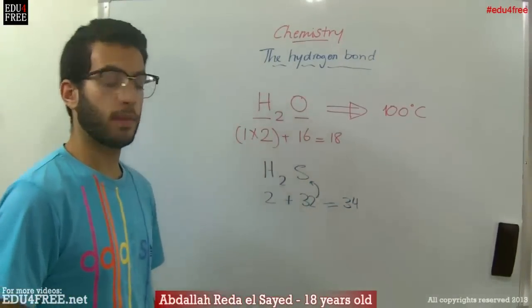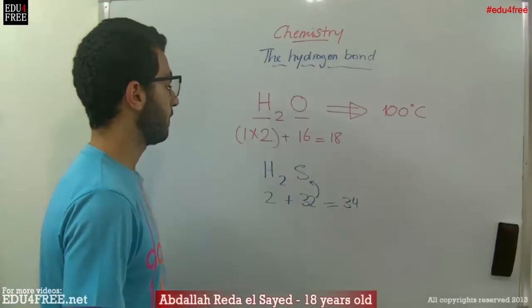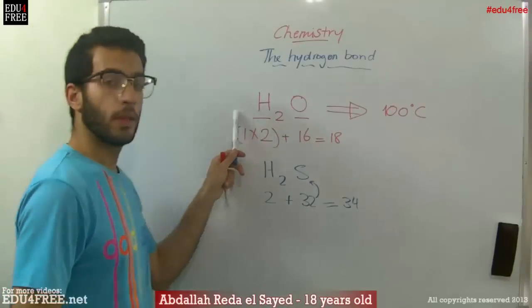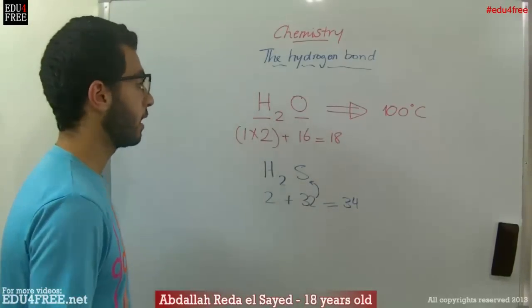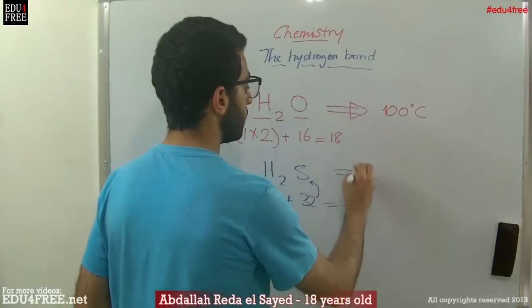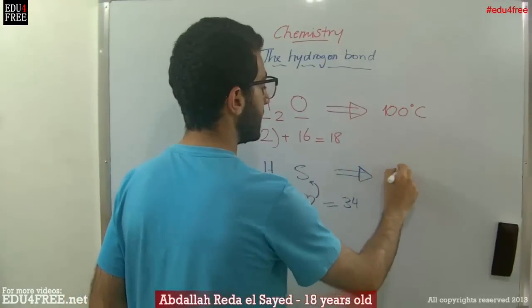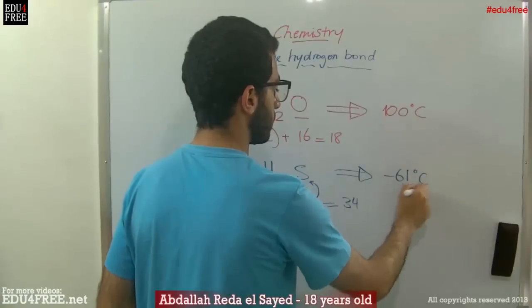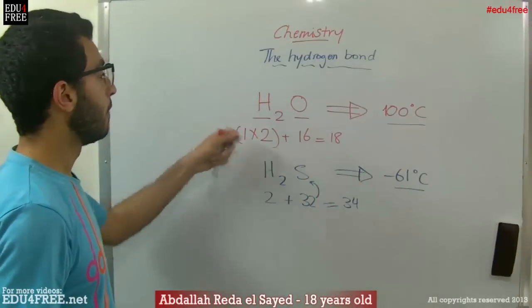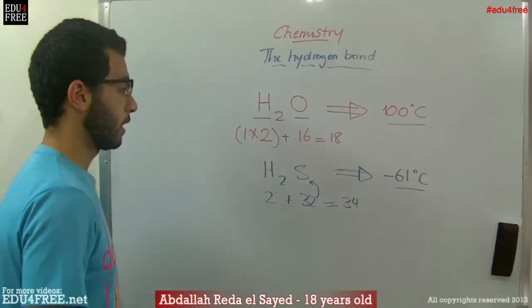So accordingly we will expect that the boiling point of hydrogen sulfide will be much higher than that of water, because it has a higher molecular mass. But on the contrary we find that the boiling point of hydrogen sulfide is negative 61 degrees Celsius, much lower than that of water. So the point here is not the molecular mass, but the formation of the hydrogen bonds.